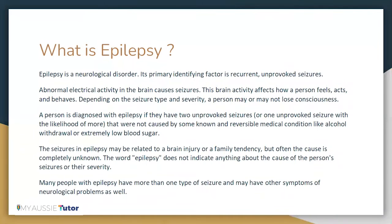Epilepsy is a neurological disorder and its primary identifying factor is recurrent unprovoked seizures. A seizure is defined as an abnormal electrical activity that occurs in the brain. This brain activity affects how a person feels, acts and behaves. Depending on the seizure type and severity, a person may or may not lose consciousness. A person is diagnosed with epilepsy if they have two unprovoked seizures or one unprovoked seizure with the likelihood of more, that were not caused by some known and reversible medical condition like alcohol withdrawal or extremely low blood sugar. The seizures in epilepsy may be related to a brain injury or a family tendency but often the cause is completely unknown.